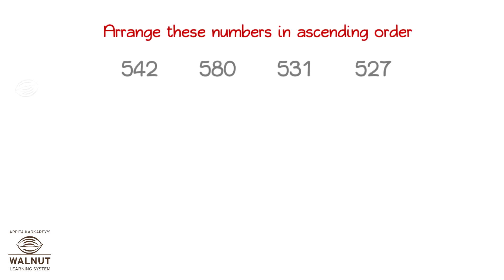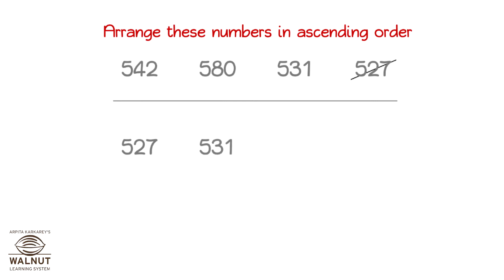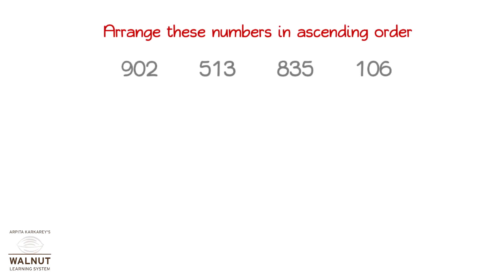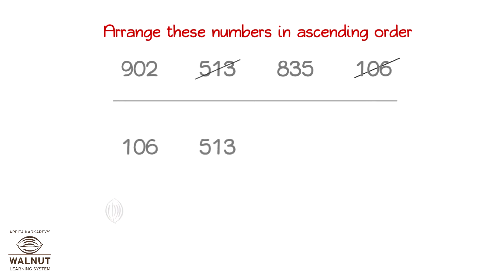Arrange these numbers in ascending order. You pick the smallest number and place it first. Then the next smallest and then the next smallest. Then write the last one. So, we get the numbers in ascending order.